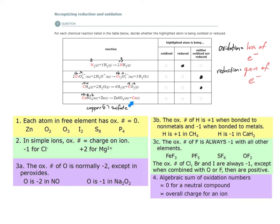Now let's look at copper over here. This is pure elemental copper — each atom in a free element has an oxidation number of zero regardless of the number of atoms. So the oxidation number of copper went from positive two and became more negative, to zero. That means these copper atoms were reduced. The gain of negative electrons brings the oxidation number down. Oxidation number helps us keep track of electrons and where they are going in the reaction. If the negative electrons are being picked up by these copper atoms, then copper is being reduced and its oxidation number decreases.